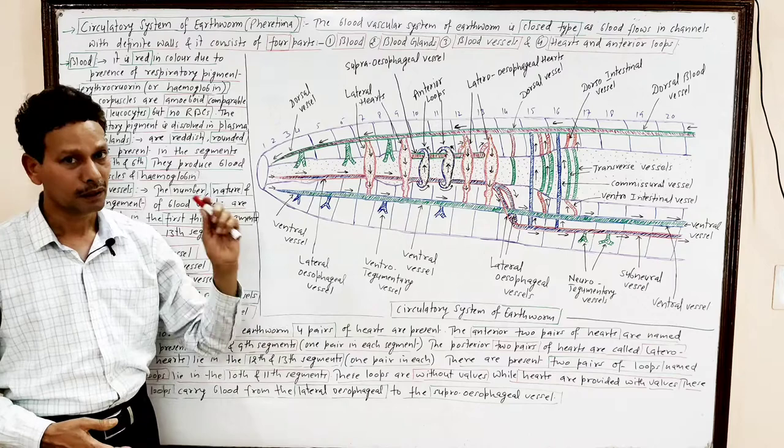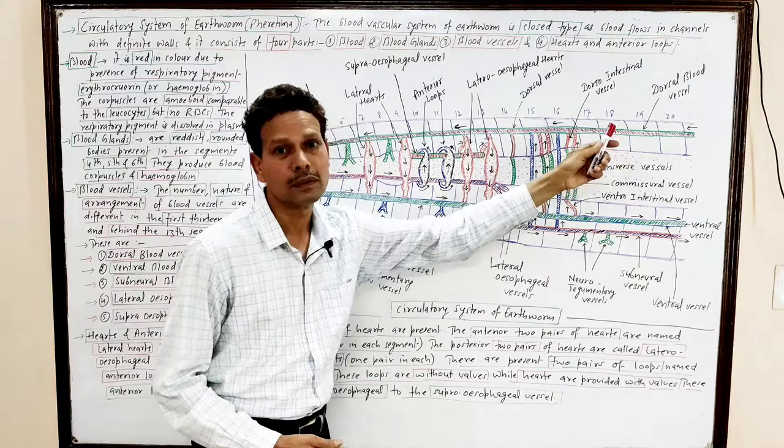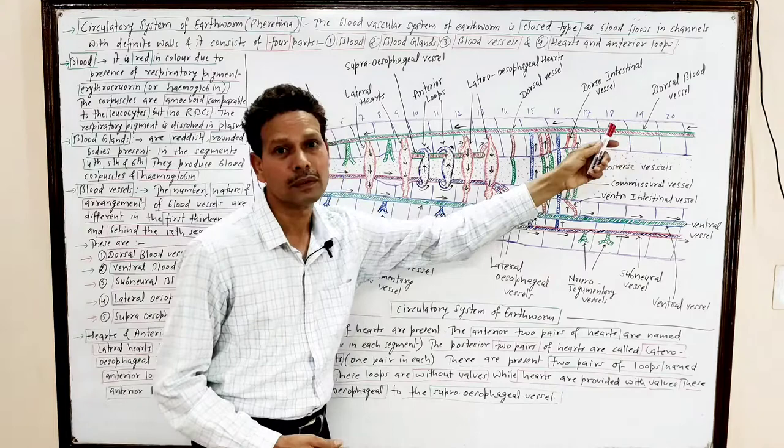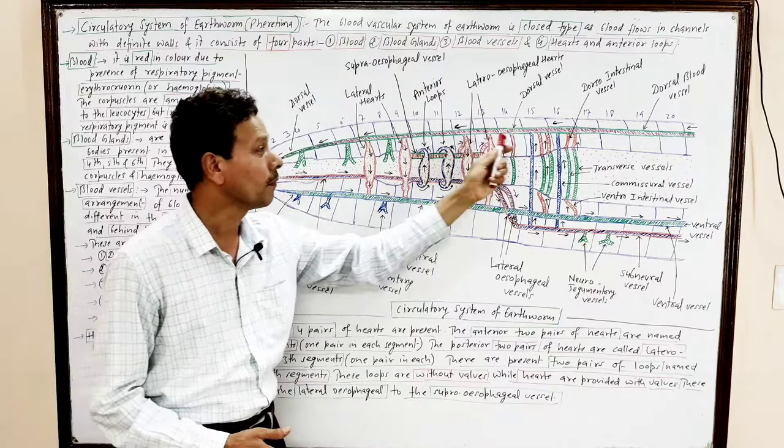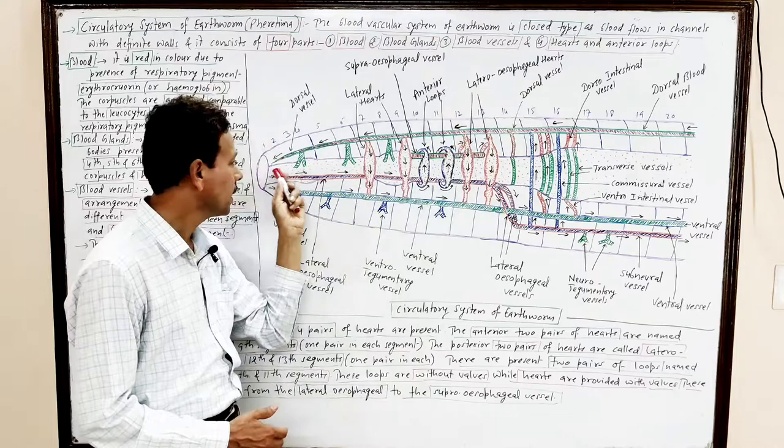The main blood vessels of this circulatory system: first of all, the dorsal blood vessel. This is the largest blood vessel, which runs mid-dorsally, lying above the alimentary canal, and extends from the last part of the body up to the anteriormost part.